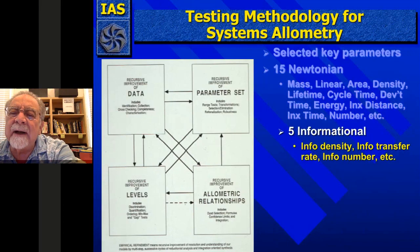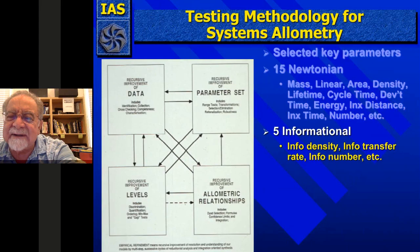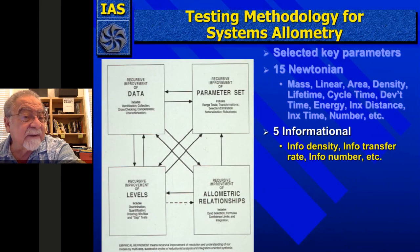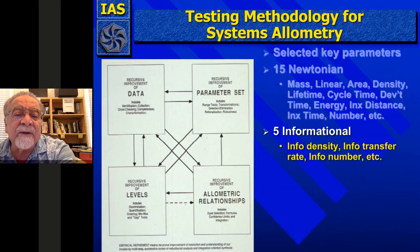We collected data that biologists had gathered within their discipline using their own parameter measurement devices. We added five information parameters: information density, information transfer rate, information number, and similar. That was our picking of 20 parameter sets. Then we used them to recursively try to improve our vision of the levels, as Wilson had done for astronomy, and look at the allometric relationships across the levels.